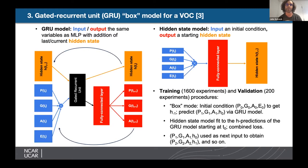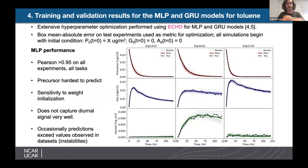The GRU model is trained in box mode, unlike the MLP, with back-propagation at every time step on a combined loss of mean absolute error plus a small term from the hidden state. We obtained the best models through extensive hyperparameter optimization using a package developed at NCAR called ECHO. This plot shows three different experiments: rows show precursor, gas, and aerosol tasks; dashed lines show the target; thin lines show different weight initialization runs; and the thick line is the ensemble mean. Overall performance is good — Pearson's above 0.95 for all three tasks.